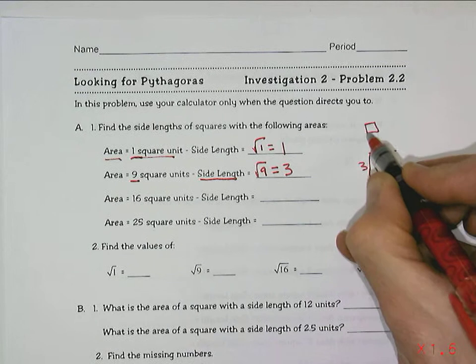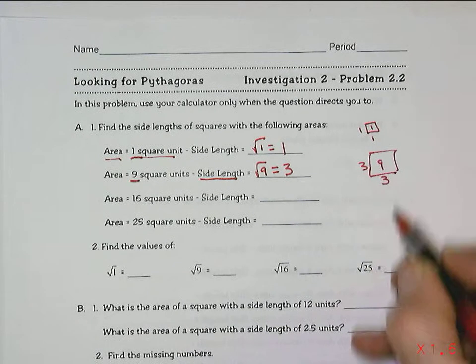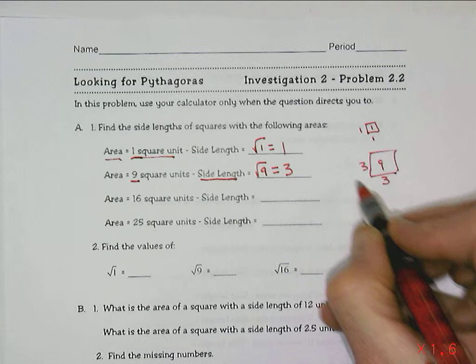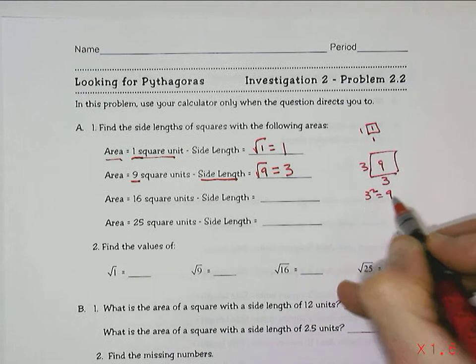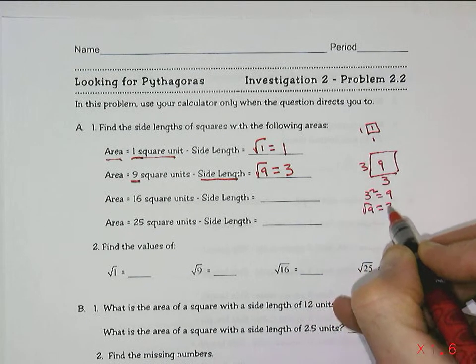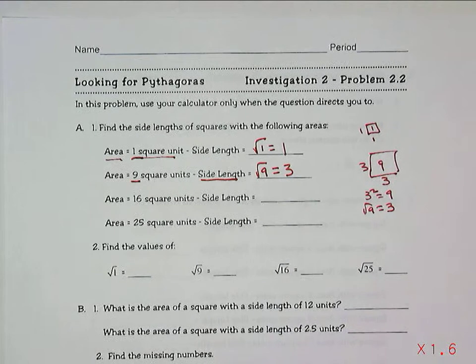If I were to look at this other one, the side lengths would have to be 1. 3 squared is 9. The square root of 9 is 3. So all we're doing now is reverse operations.